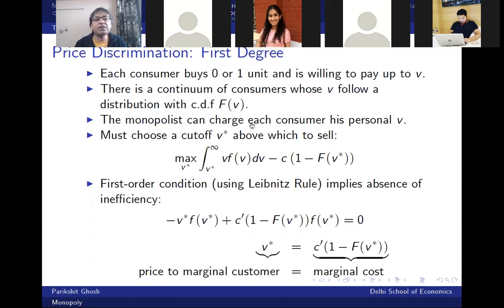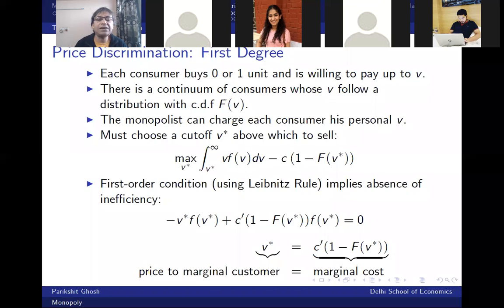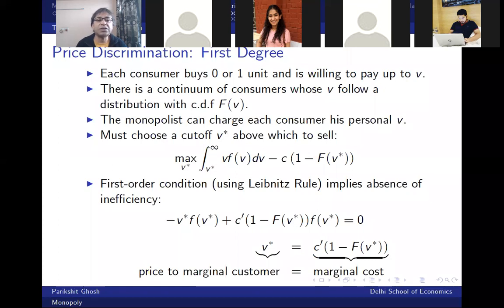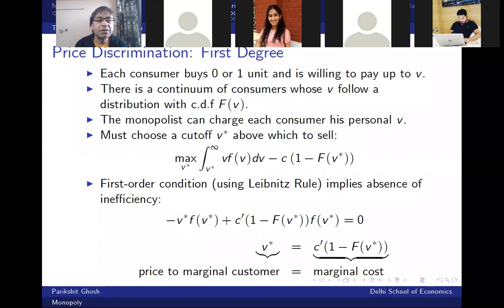Suppose the monopolist is a mind reader who can read each person's individual V. The monopolist has no reason to charge each consumer less than their personal V. You're willing to pay up to 100 rupees — they'll charge you 100. I'm willing to pay 50 — they'll charge me 50. The only question for the monopolist is which consumers to serve. The monopolist's problem boils down to a cutoff V*, selling to people whose willingness to pay is V* or more.